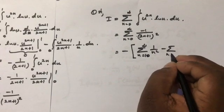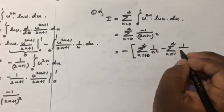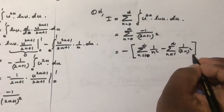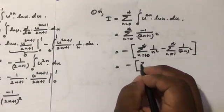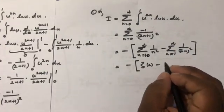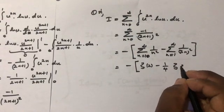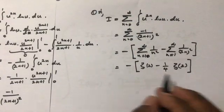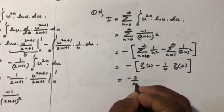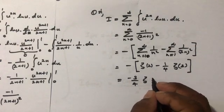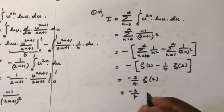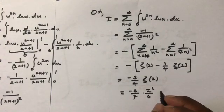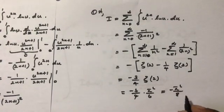This is equal to (3/4) times zeta(2). Since zeta(2) = pi²/6, we get minus (3/4) times pi²/6, which equals minus pi²/8. This is the answer! If you like this video, please subscribe to the channel. Thank you for watching.